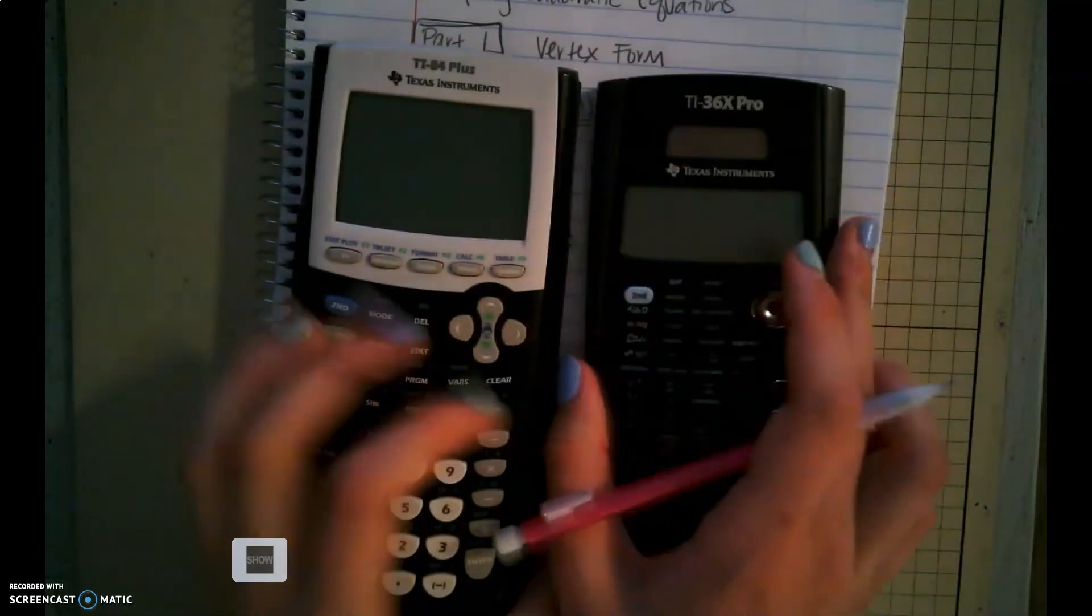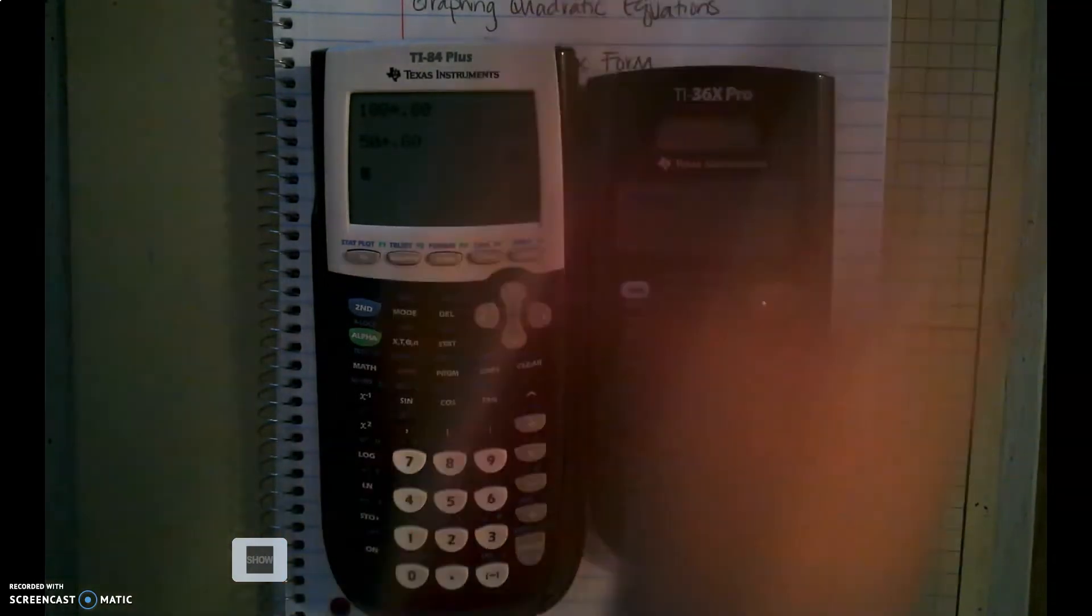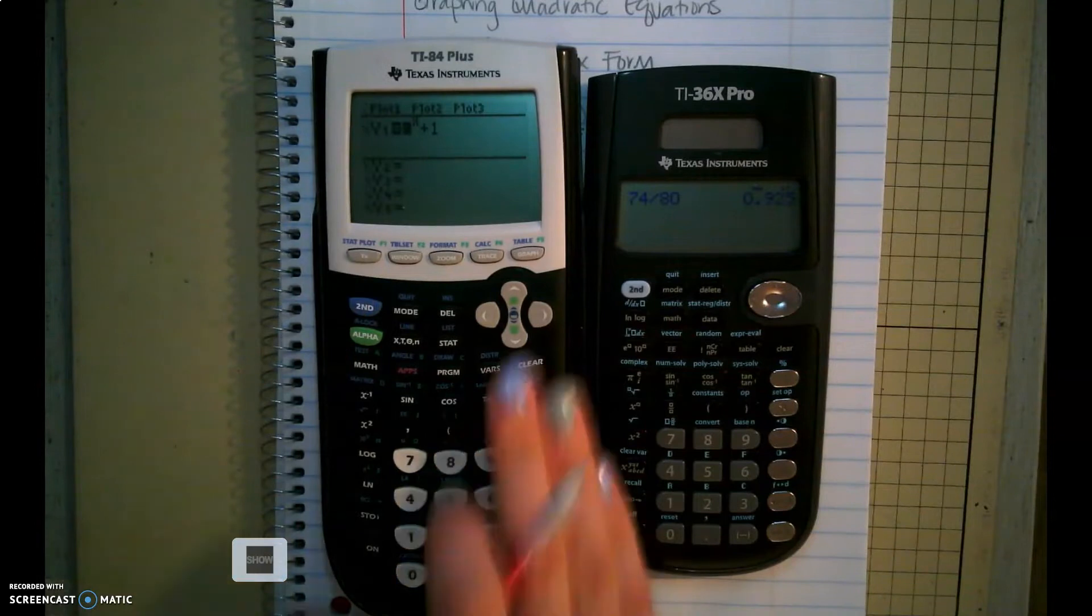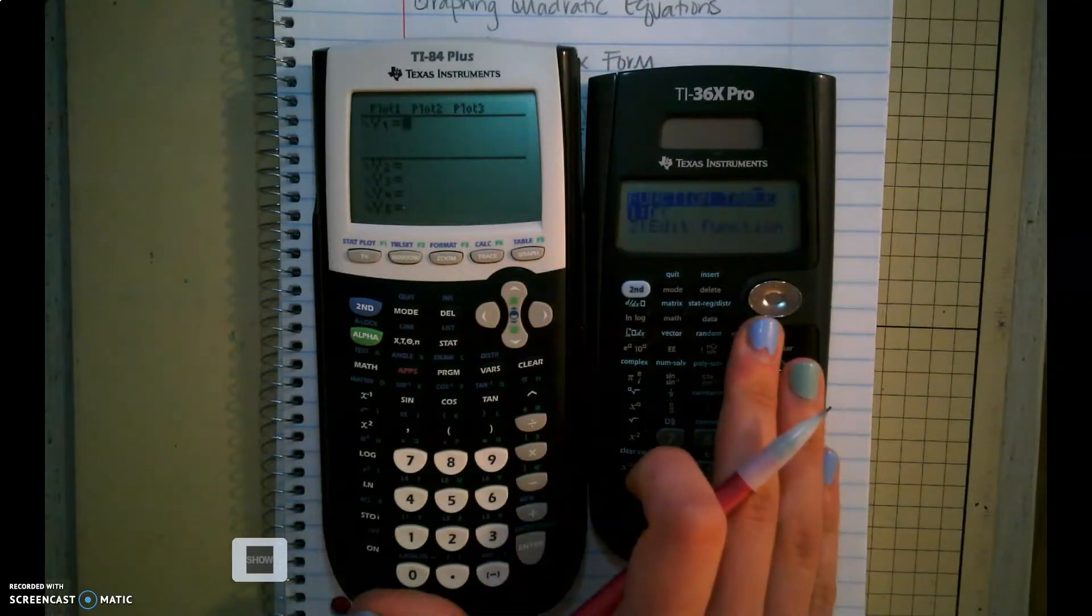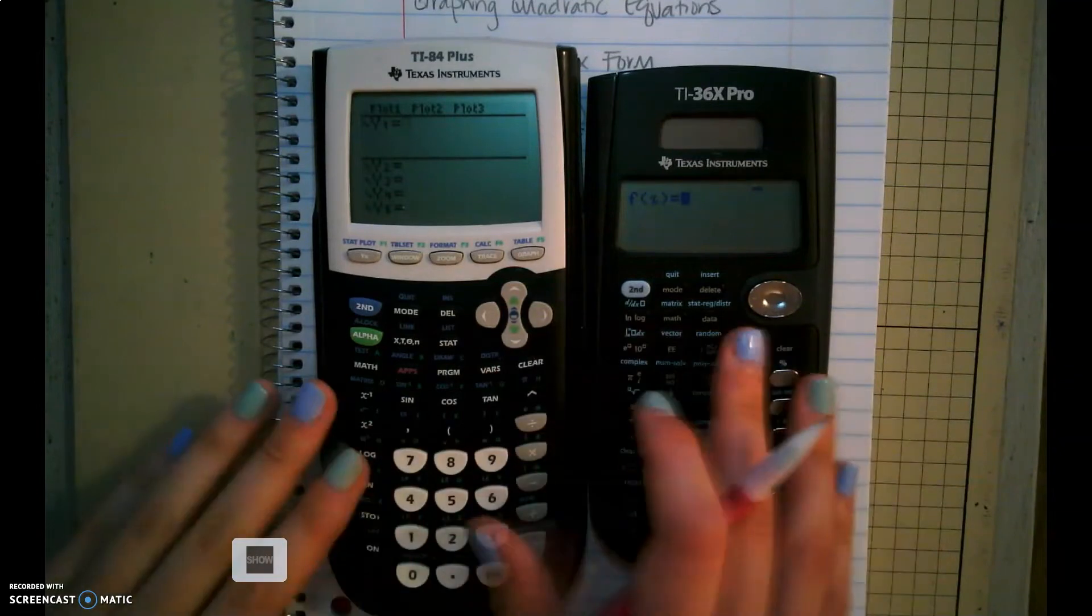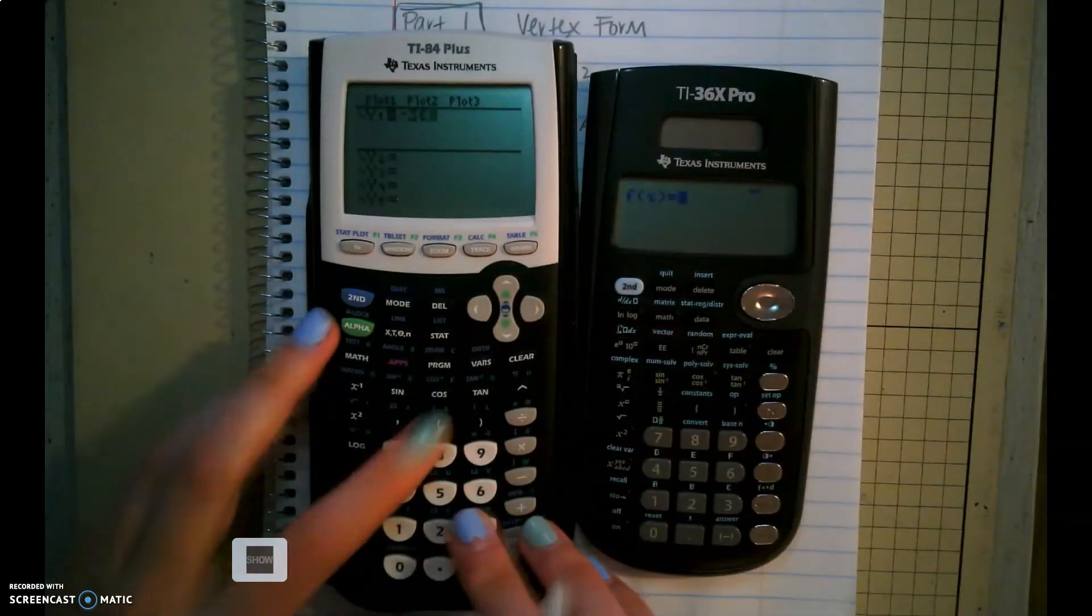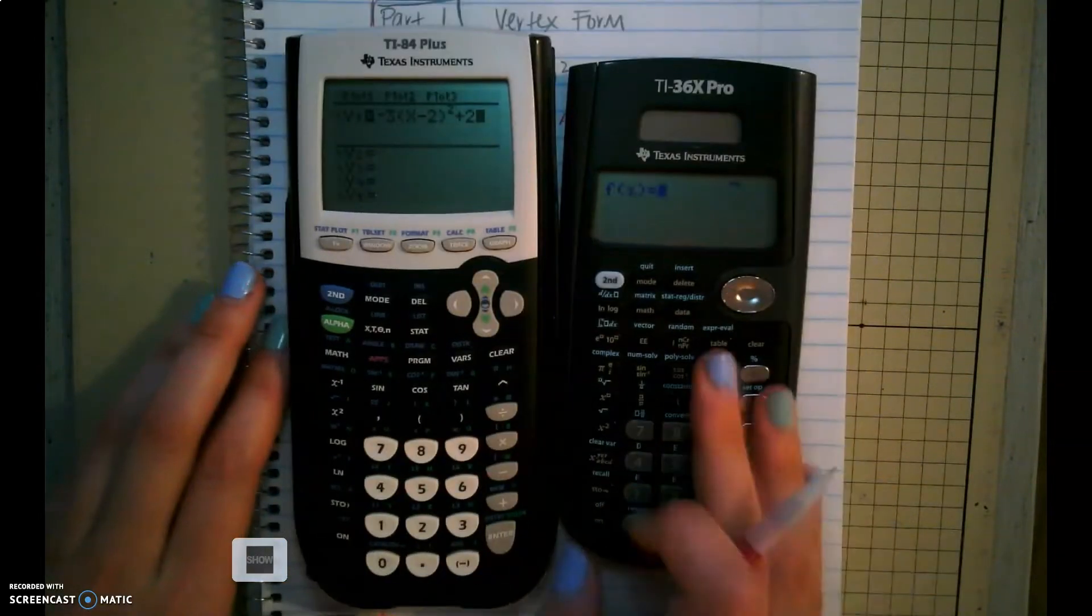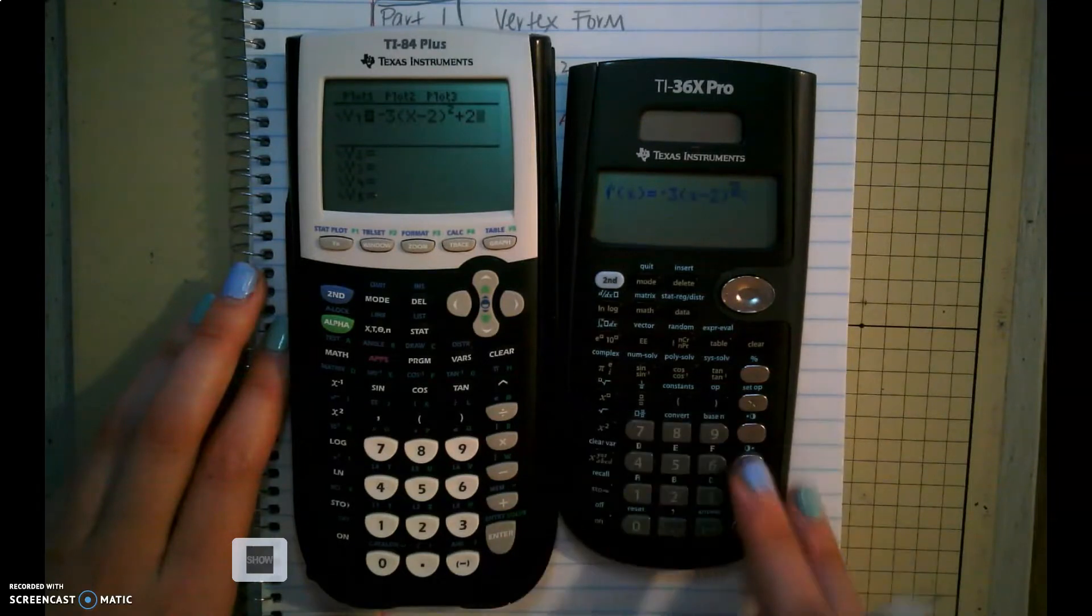We have 2 different types of calculators that we've been practicing with. The first thing we want to do if we have a graphing calculator is we want to go to the Y equals button and clear out what we have. If we have a TI-36 or scientific calculator, we want to find the table button. On this one we want to edit a function. I'm going to clear that out. Once we have it set up, we want to type in the exact problem that we've seen. So we're going to type in negative 3 parentheses, X minus 2 close them squared plus 2. Same thing here. Negative 3 parentheses X minus 2 squared plus 2.